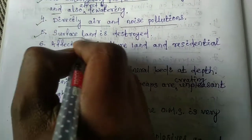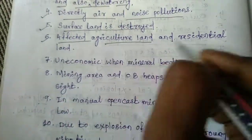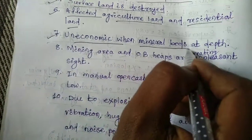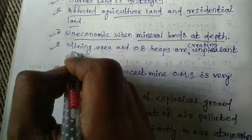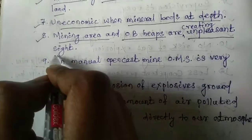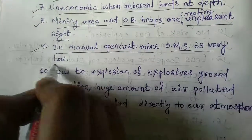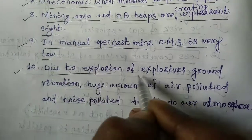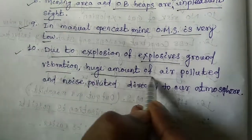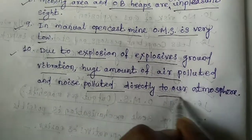Fourth, air and noise are directly polluted by opencast mine. Fifth, surface land is destroyed. Sixth, affected agricultural land and residential land. Seventh, uneconomical when mineral beds are at depth. Eighth, mining area and overburden heaps are creating unpleasant sites. Ninth, in manual opencast mine, OMS is very low. Tenth, due to explosion of explosives, ground vibration and a huge amount of air and noise pollution is directly released to the atmosphere.